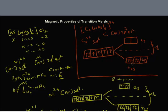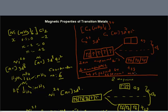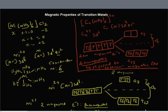Looking at this electron configuration, there are zero unpaired electrons. When you have no unpaired electrons, that condition is called diamagnetic. If you place a solution of this complex ion in an external magnetic field, it will be repelled. So diamagnetic substances are repelled by an external magnetic field, whereas paramagnetic substances — which have unpaired electrons acting like tiny magnets — are attracted by an external magnetic field.